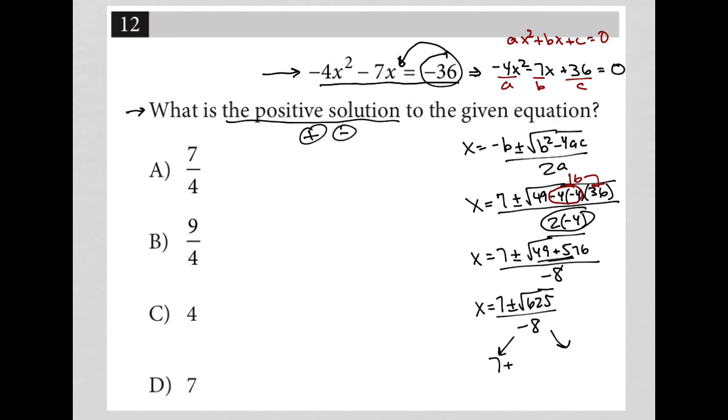One is 7 plus, so I can simplify this. Square root of 625 is actually equal to 25. So this becomes 7 plus 25 over negative 8, and the other would be 7 minus 25 over negative 8.